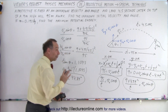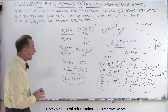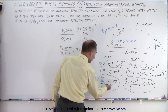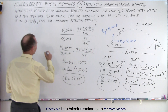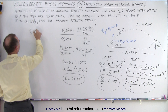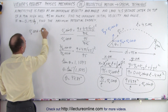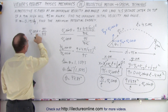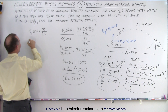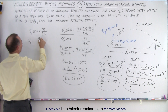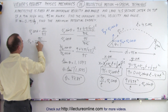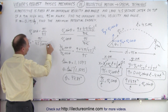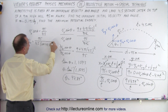Now to get the second unknown — the velocity — we use the simpler x equation: v-initial times cosine of theta equals 95 divided by 4.5. Since we now know theta, we have v-initial equals 95 divided by 4.5, divided by cosine of 47.84 degrees.